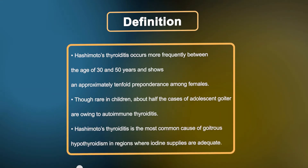Hashimoto's thyroiditis occurs more frequently between the age of 30 and 50 years and shows an approximately tenfold preponderance among females. Though rare in children, about half the cases of adolescent goiter are owing to autoimmune thyroiditis. Hashimoto's thyroiditis is the most common cause of goitrous hypothyroidism in regions where iodine supplies are adequate.